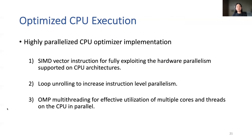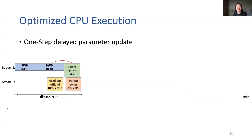We further optimize CPU execution in Zero Offload by implementing a highly optimized CPU optimizer with three levels of parallelism. First, we use SIMD vector instructions to fully exploit hardware parallelism supported on the CPU architecture. Second, we implement loop unrolling to increase instruction-level parallelism. Third, we use OpenMP multi-threading for effective utilization of multi-cores and threads on CPU in parallel. Despite this highly optimized CPU optimizer, the CPU computation overhead can still be a bottleneck when training with very small batch sizes.